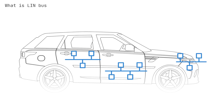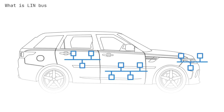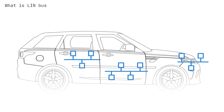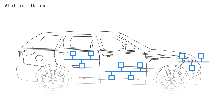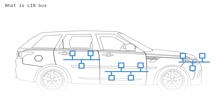The LIN protocol uses time-triggered scheduling with a guaranteed latency time. Further, it offers variable data lengths: 2, 4, or 8 bytes. LIN also supports error detection, checksums, and configuration. The operation voltage is 12 volts, while the physical layer is based on ISO 9141, also known as K-Line. Finally, LIN supports sleep mode and wake-up.